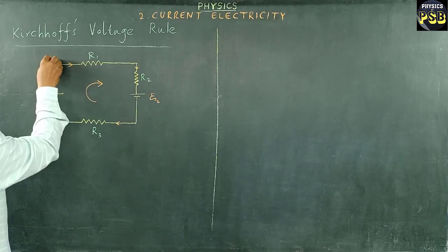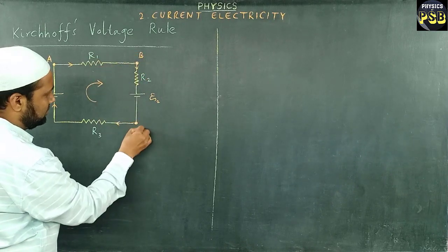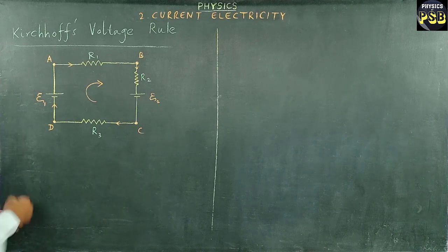Now, for better understanding, I take this point and name it as A, and this is named as B. This is C, this is D.